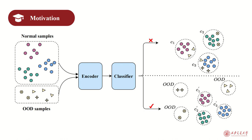For example, some rare cases never observed in medicine could be collected in a query set, or papers about a new research topic could gradually emerge in a citation graph. A conventional graph Few-Shot classification model could mistakenly classify an OOD sample into an existing category, sometimes resulting in severe incidents in safety-critical applications.